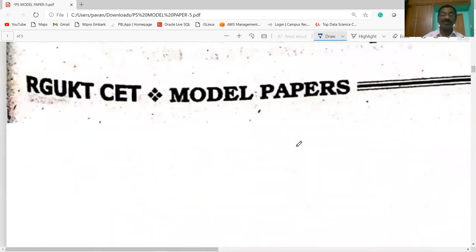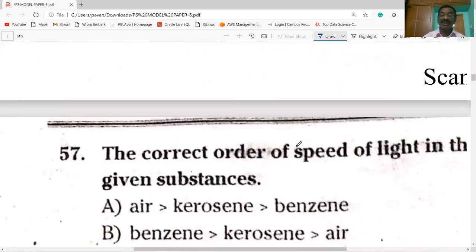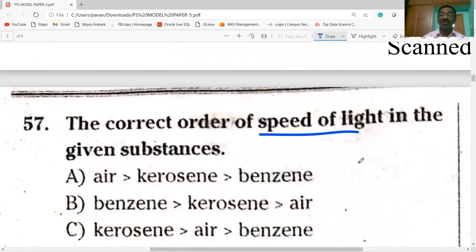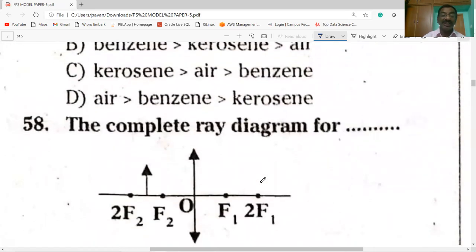Next question on the screen. The correct order of speed of light in the given substances. You know that speed of light is more in air because it has less refractive index. Speed of light: air is greater than kerosene is greater than benzene.